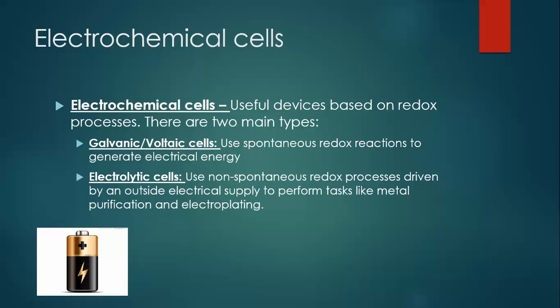Electrolytic cells are sort of the opposite — they use reactions that are non-spontaneous. In fact, you have to use electricity to power an electrolytic cell. It may not be obvious how that's useful, but it is useful in a couple of different ways. They do things like metal purification and electroplating — that's how we get aluminum, for instance. There's a lot of things that can be done with electrolytic cells, but that's going to be down the road. Today, we're going to start talking about voltaic cells.